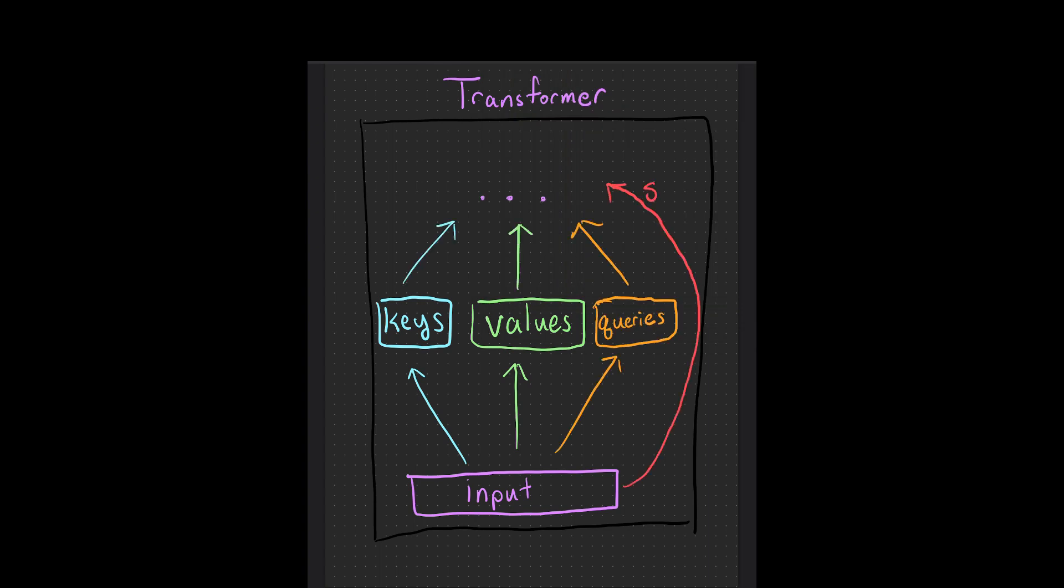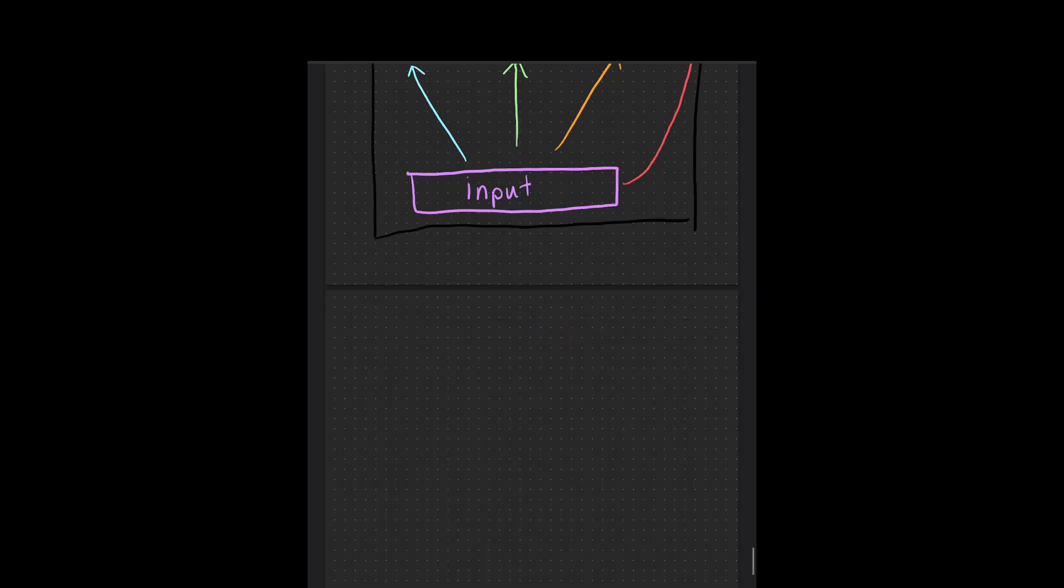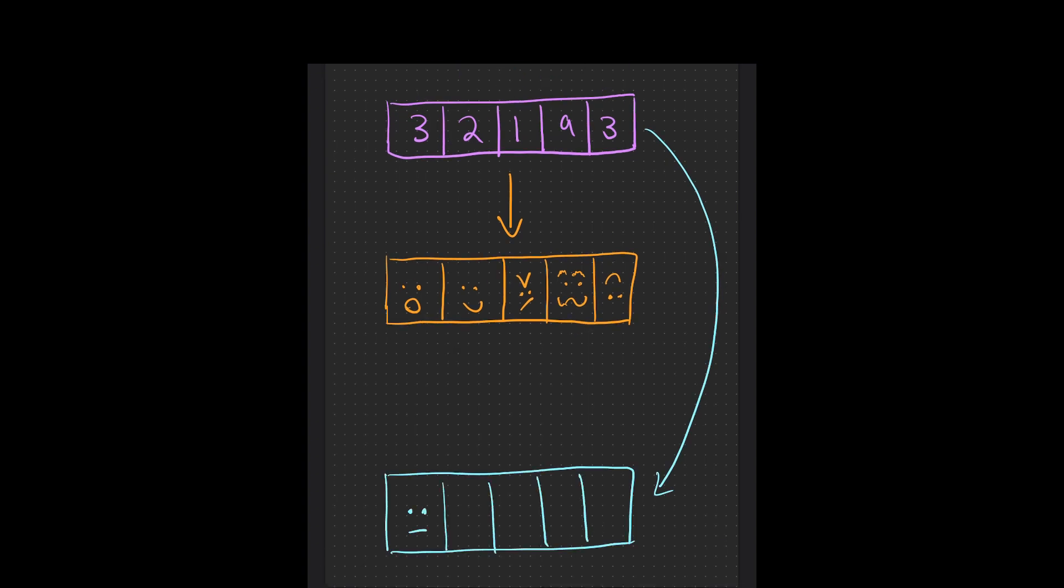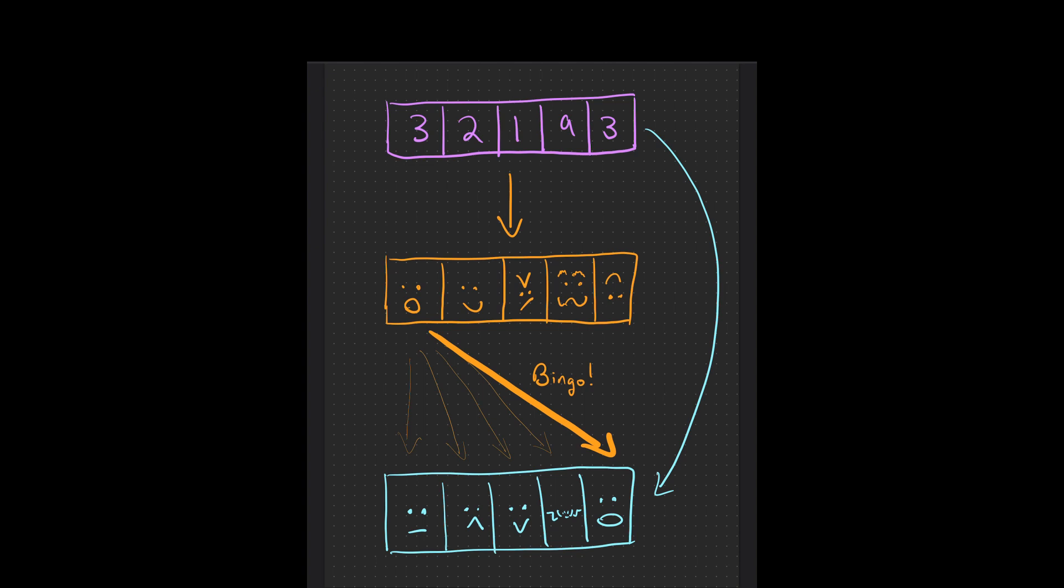Now, why is this a good task with which to test transformer behavior? Well, recall how a transformer works. In its attention mechanism, the input gets transformed three ways into keys, values, and queries, and they all get combined after some math, along with the original input itself. How do the keys, values, and queries function?